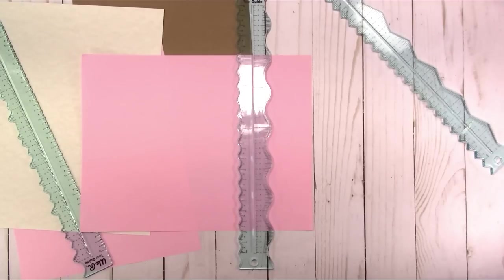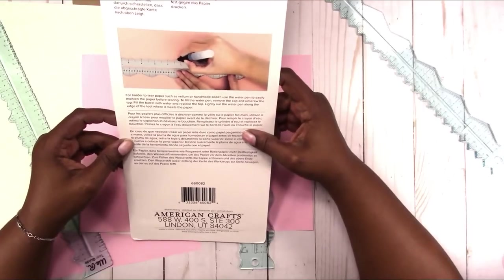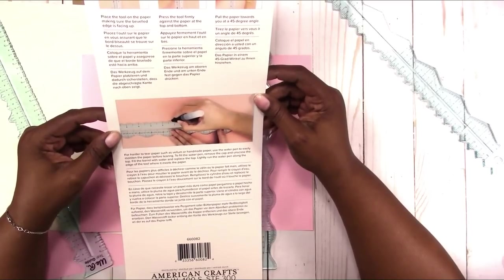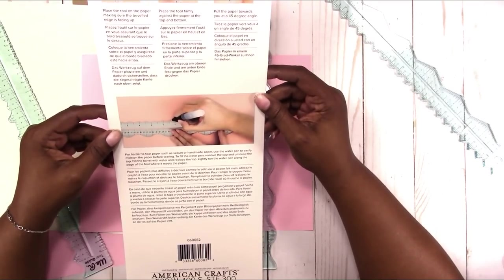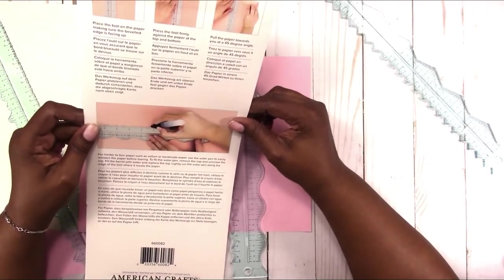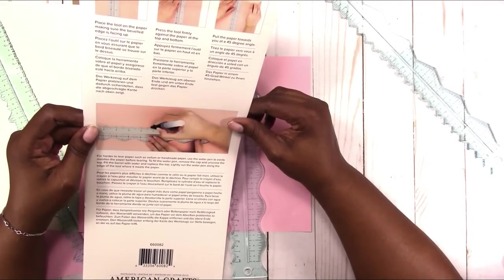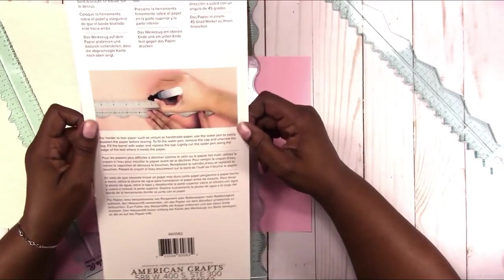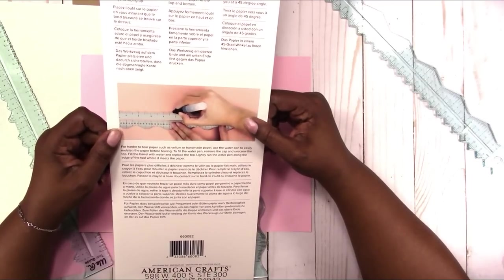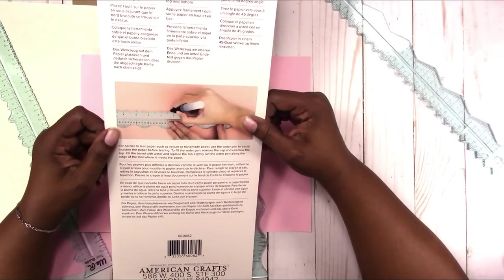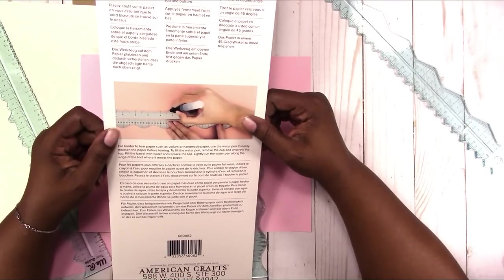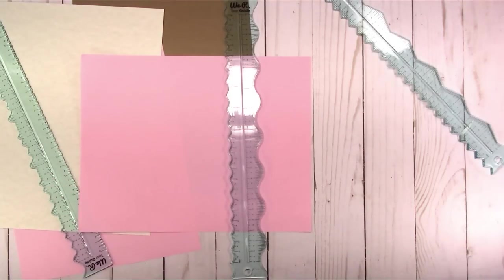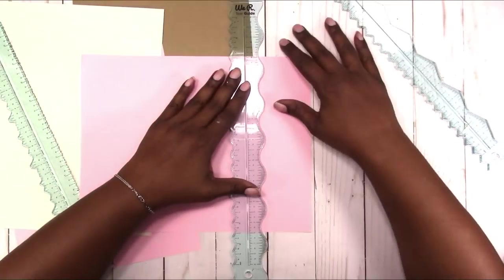I did keep the directions so let's see. Place tool on top of the paper, press tool firmly. Oh let me read the whole thing. Place the tool on the paper making sure the beveled edge is facing up. Press the tool firmly against the paper at the top and bottom, pull the paper toward you at a 45 degree angle. Then it says for harder to tear paper such as vellum or handmade paper use the water pen to easily moisten the paper before tearing. Lightly run the water pen along the edge of the tool where it meets the paper. So that's all the instructions we get, so the beveled edge is up and I'm going to hold firmly.